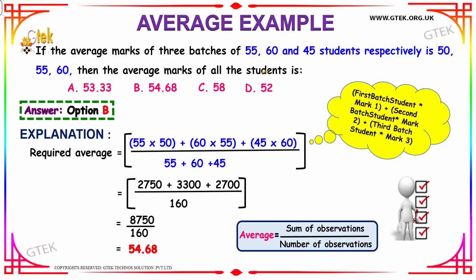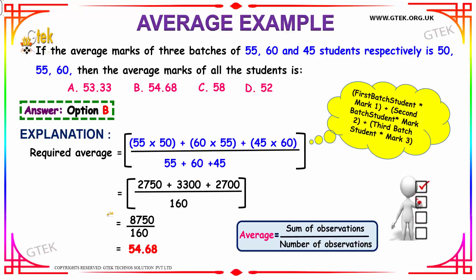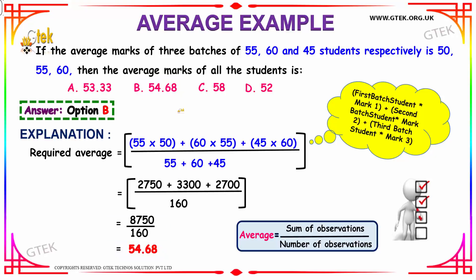For 55 students with average 50, the sum is 50 into 55. For 60 students with average 55, the sum is 60 into 55. For 45 students with average 60, the sum is 45 into 60. The total number of students is 55 plus 60 plus 45, which is 160. This gives 8750 divided by 160, which equals 54.68 — that is option B. Hence option B is the answer.